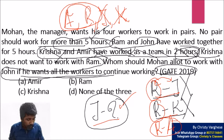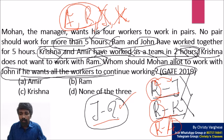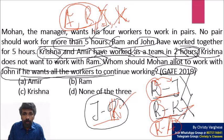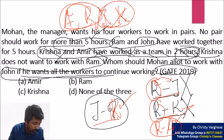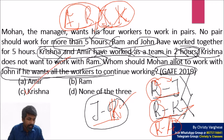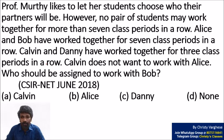Since Ram pairs with Amir, the only remaining person for John is Krishna. That is why the answer is option C — Krishna. The starting point matters: if you start from John's perspective, you take more time because only one piece of information is given about John. Starting from Ram, who has more constraints, reaches the answer fastest.